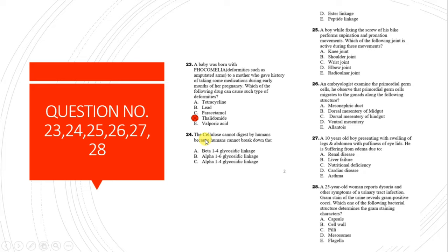Question 24: Cellulose cannot be digested by the human body because humans cannot break down the beta-1,4 glycosidic linkage. Cellulose contains beta-1,4 glycosidic linkages.